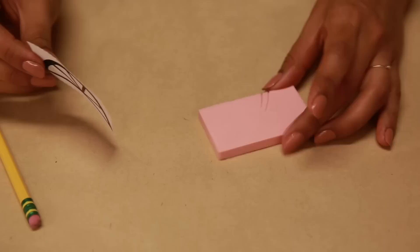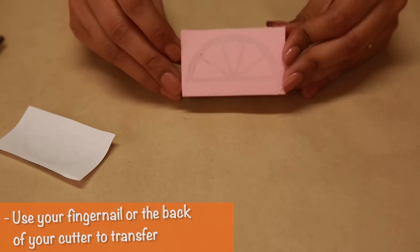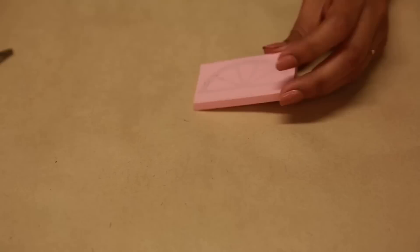So next, you just put your template right on top of your block and just rub it right on there. And there you have your transfer.